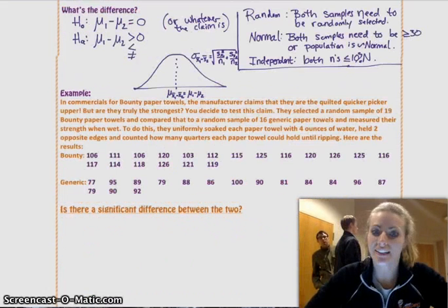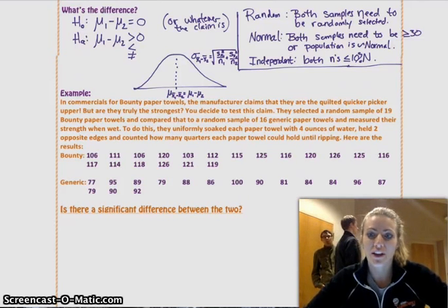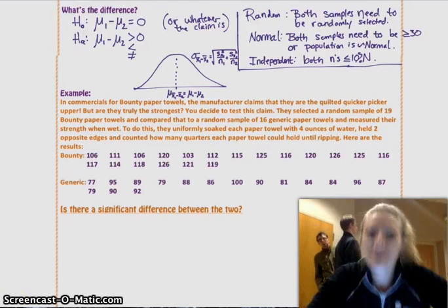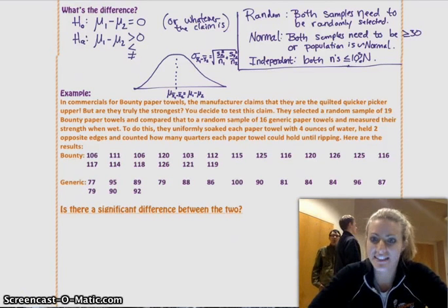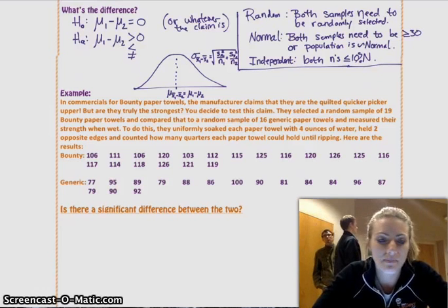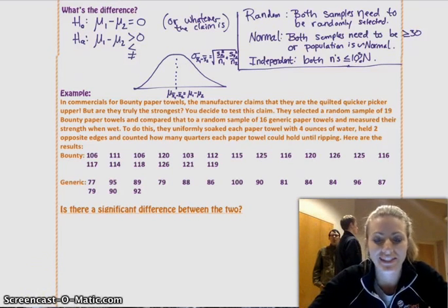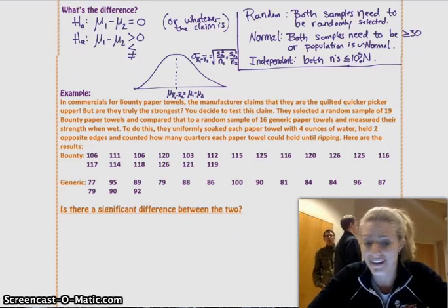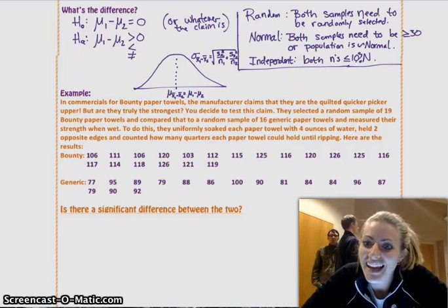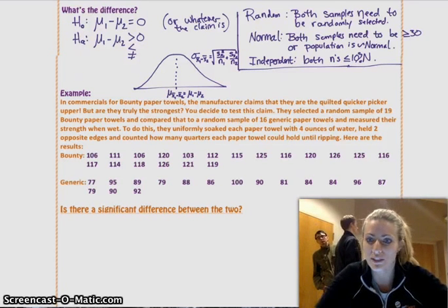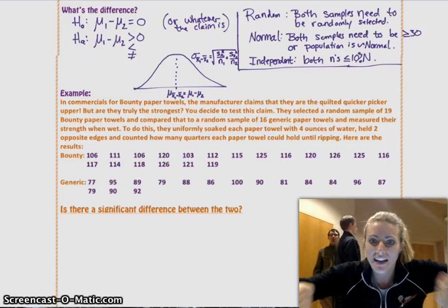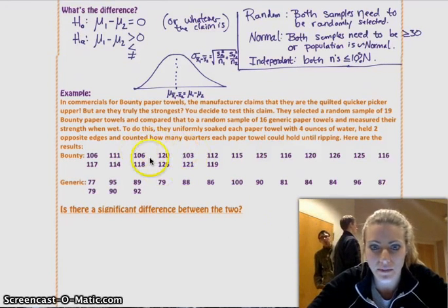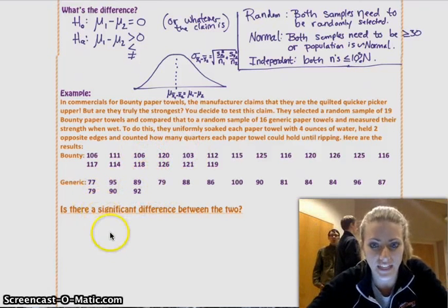Let's try an example. So, in commercials for Bounty paper towels, the manufacturer claims that they are the quicker picker-upper. But the question is, are they truly the strongest? You decided to test this claim. They selected a random sample of 19 Bounty paper towels and 16 generic paper towels. And measured their strength when wet. To do this, they uniformly soaked each paper towel with four ounces of water, held the two opposite edges, and counted how many quarters that the towel could hold until it ripped. And then here are the results.